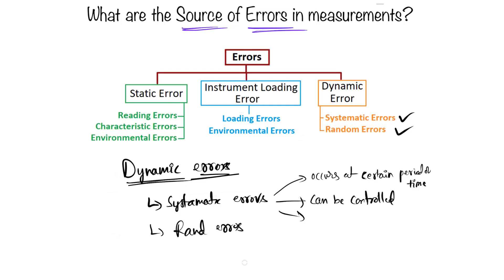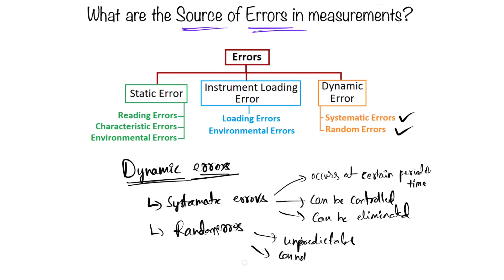Systematic errors can be controlled and sometimes can be eliminated. Random errors, on the other hand, are unpredictable in nature — we cannot say when they will occur, and they cannot be controlled. However, random errors can be corrected at the final results.